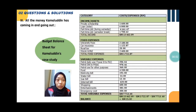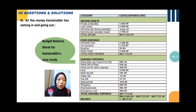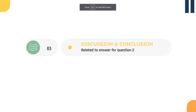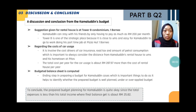After computing the income statement, fixed expenses, and variable expenses, the budget balance sheet for Kamaluddin's case study is calculated using the formula: income (assets) minus fixed expenses minus variable expenses. The total balance obtained is about 25 ringgit and 82 cents.